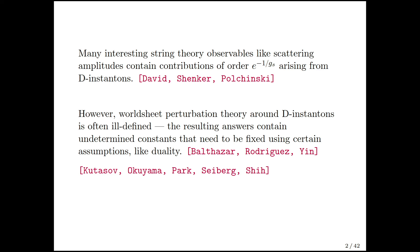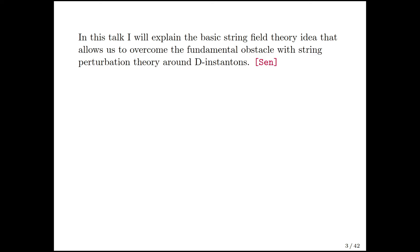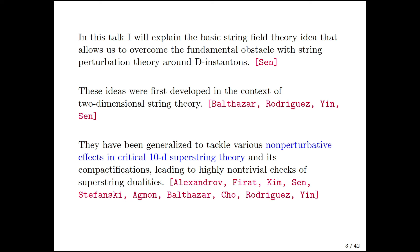This has shown up both in recent work on C equals 1 matrix quantum mechanics and in older papers that computed annulus amplitudes in the C less than 1 case. In this talk, I will explain the basic string field theory idea that allows us to overcome this fundamental obstacle with string perturbation theory, which is due to Ashok Sen in the last few years and was developed in the context of two-dimensional string theory. However, these methods by now have been generalized to tackle various non-perturbative effects in 10D critical superstring theory and have led to highly non-trivial checks of superstring dualities.